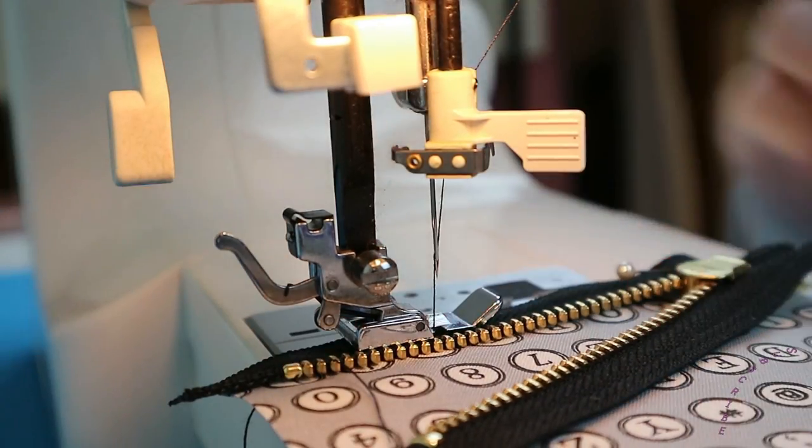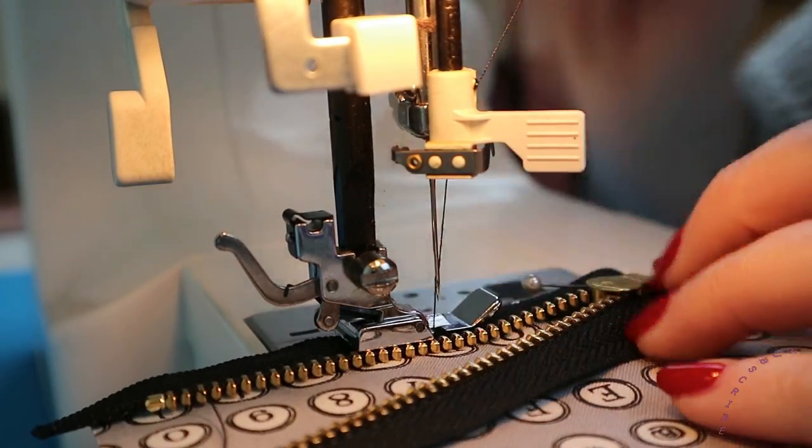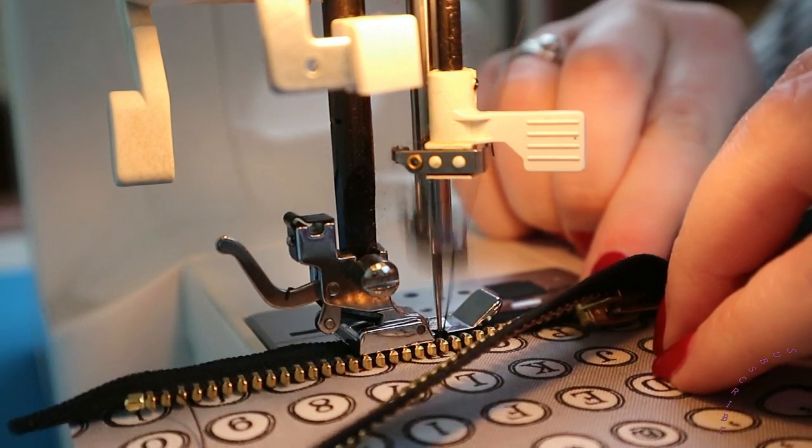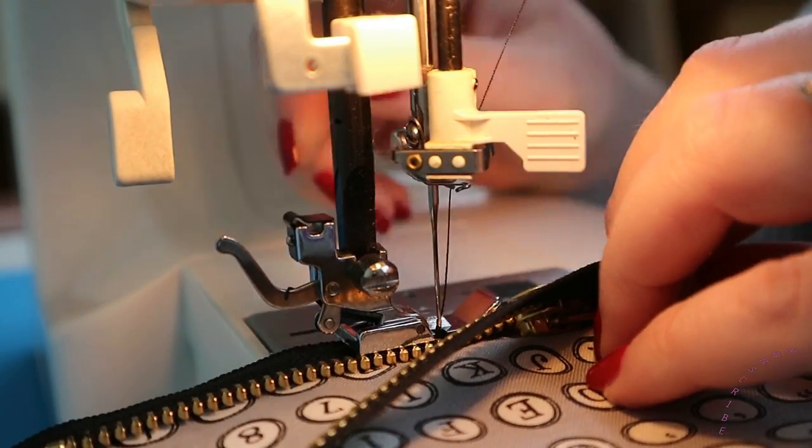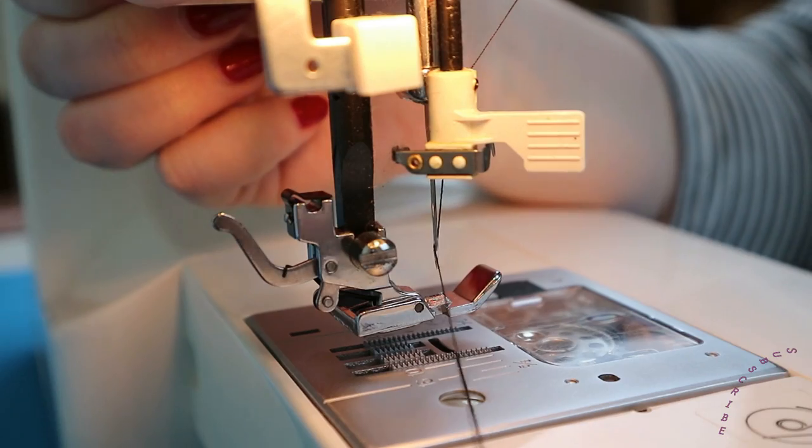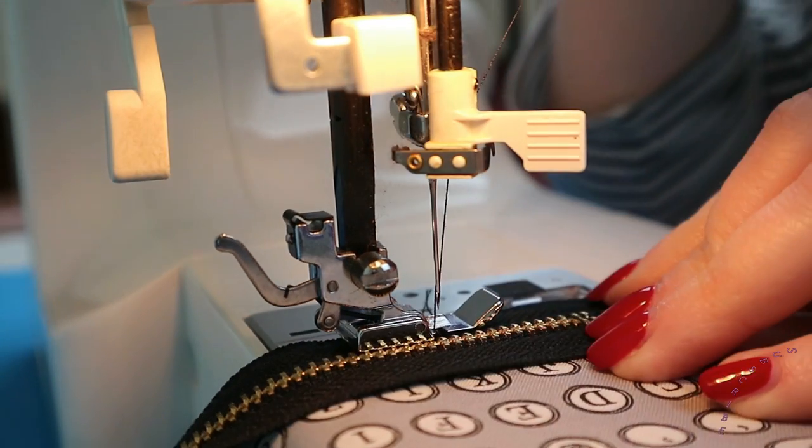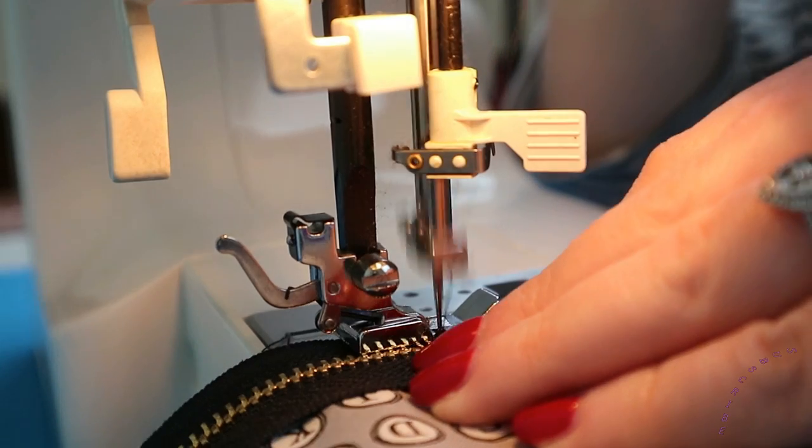So now using the zipper foot on your machine sew the zip to the fabric. When you get close to the zipper pull just remove it from the machine, close the zip, and then continue sewing the rest of the zip to the fabric.